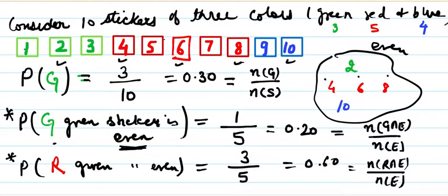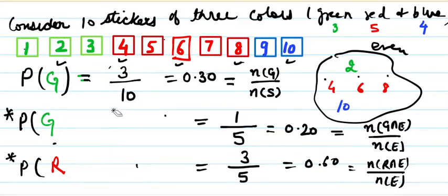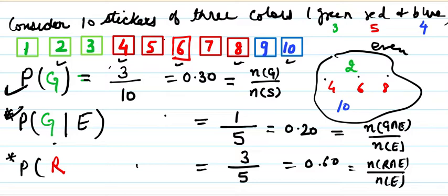Let's apply this to our example. The probability of green is 3/10, which is 0.3 or 30%. The probability of green given even is 1/5, which is 20%. Since these two values are not the same, the selection of green and the selection of even are not independent events.